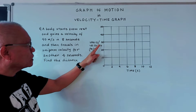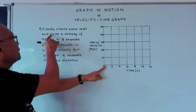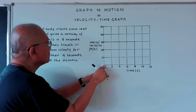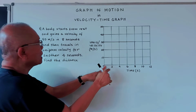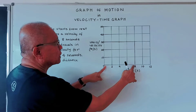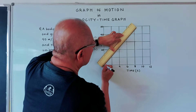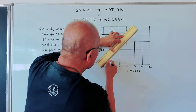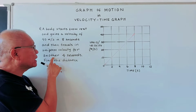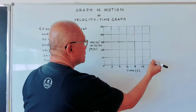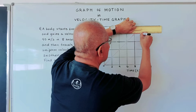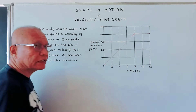The object gains a velocity of 40 meters per second in 8 seconds. So from zero velocity it is gaining speed up to 40 meters per second at 8 seconds. Then it travels at uniform speed or velocity for another 4 seconds, so 8 plus 4 is 12 seconds total. It travels horizontal up to 12 seconds — that is our graph.